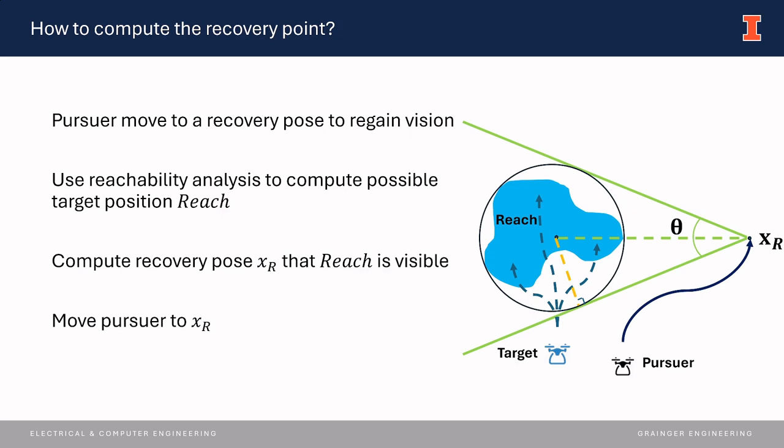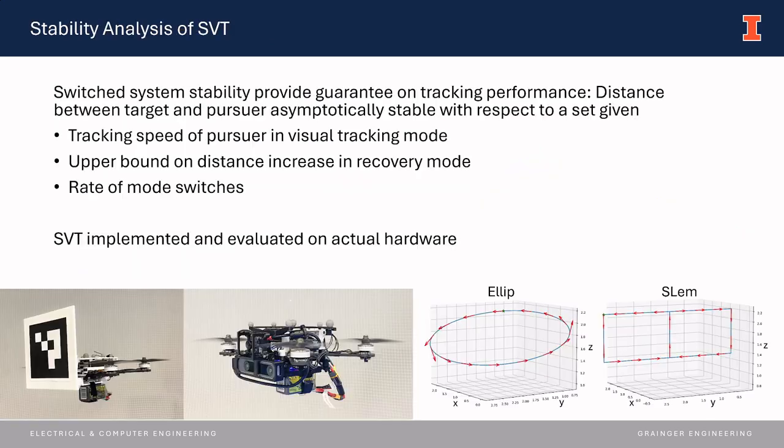The last step involves moving the pursuer to the recovery pose. We further provide a stability analysis of SVT by extending classical results from switched system stability. We show that the distance between the target and the pursuer will be asymptotically stable with respect to our sets, given the tracking speed of the pursuer in visual tracking modes, upper bounds on distance increase in recovery modes, and the rate of mode switches. To our knowledge, we are the first to provide a stability analysis for the visual tracking problem and connect the stability criteria with control design parameters.